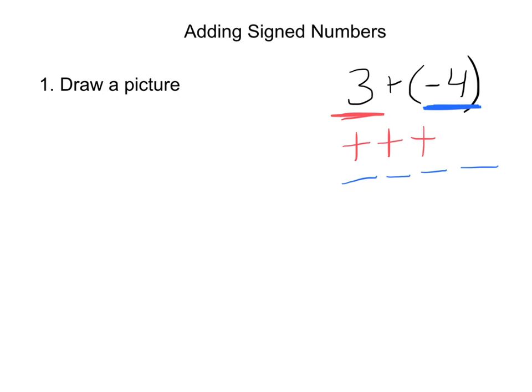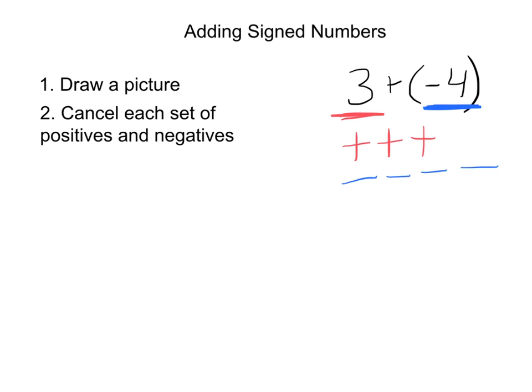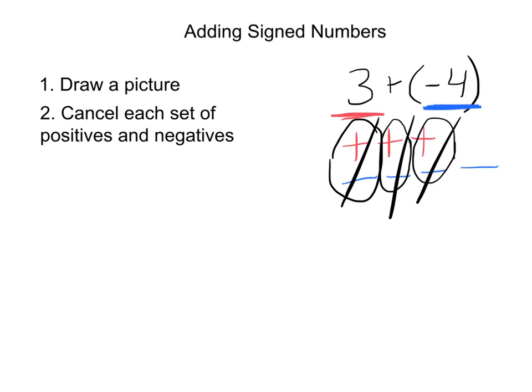Step two is to simply cancel each set of positives and negatives. Any time you have a set of positives and negatives, one positive and one negative will always cancel each other out. Here's another set that will cancel, and a third set. Why do they cancel? For example, let's say you owed someone a dollar and then someone gave you a dollar — that cancels out. You now have no money; you pay it back and you're even. So a positive and a negative will always cancel each other out.